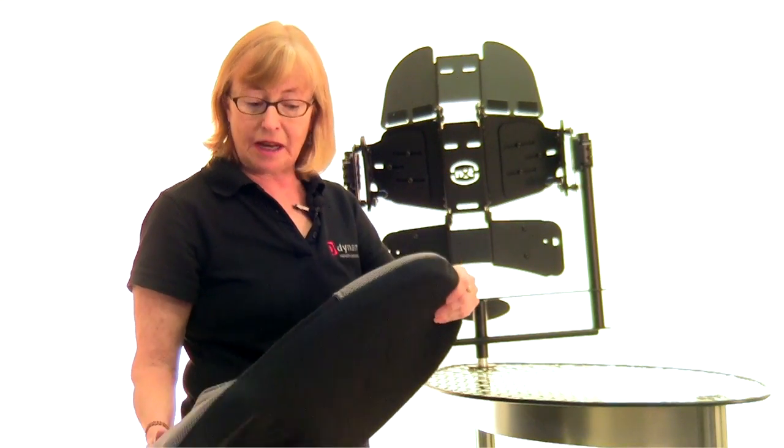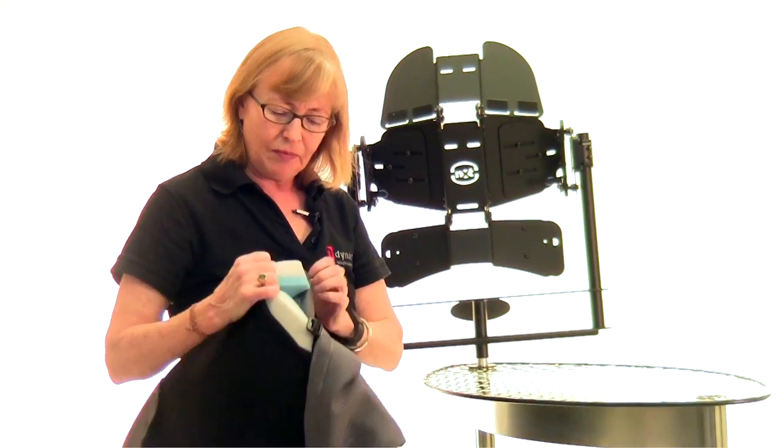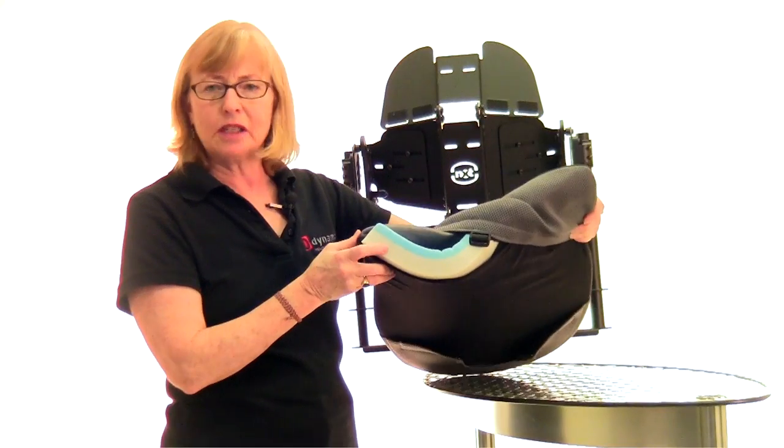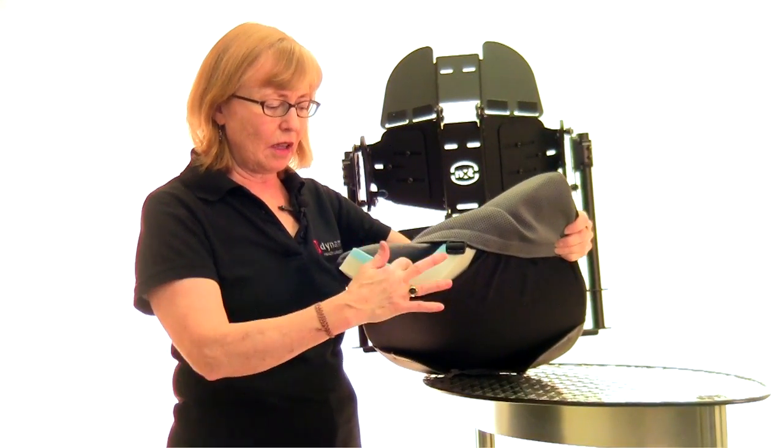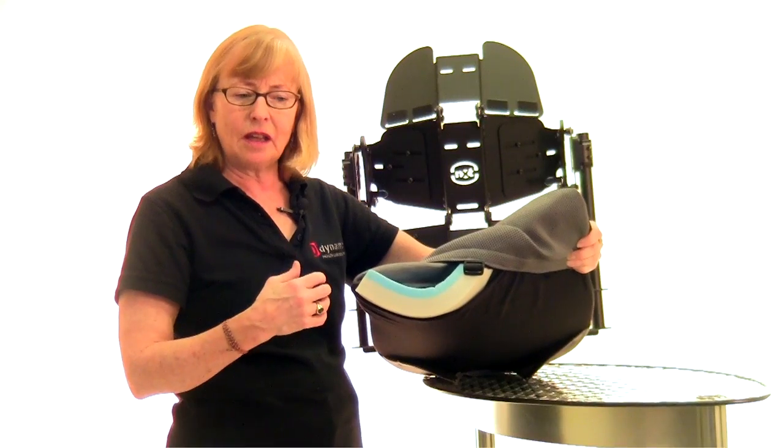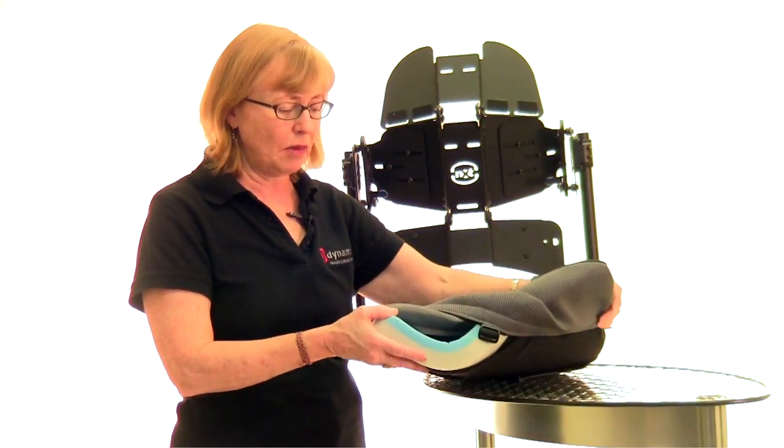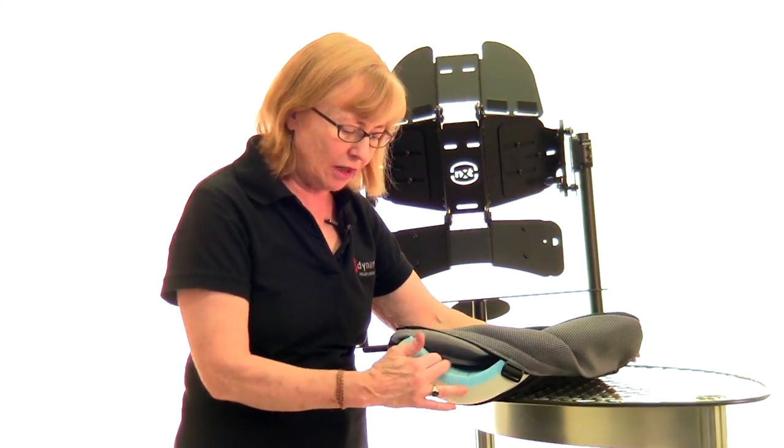The foam itself is a two-layer foam. So the layer against the aluminum shell is a polyurethane high-density, meaning good quality foam. And then close to the client is a viscoelastic, and it's actually gel-infused viscoelastic. It's the same foam we use for the Bio Fit cushion.